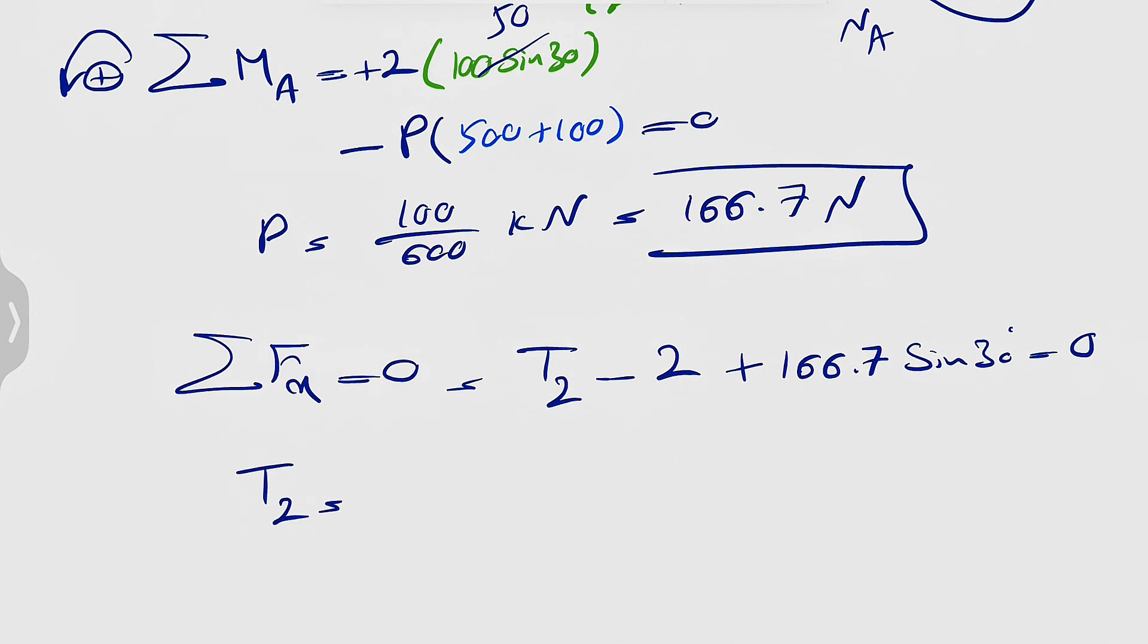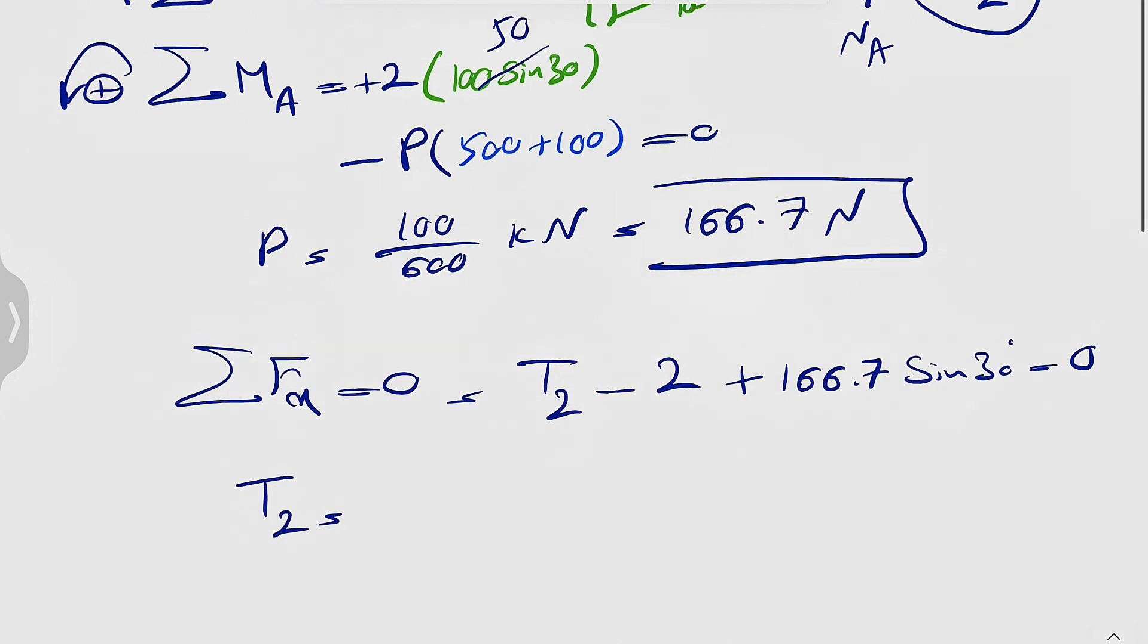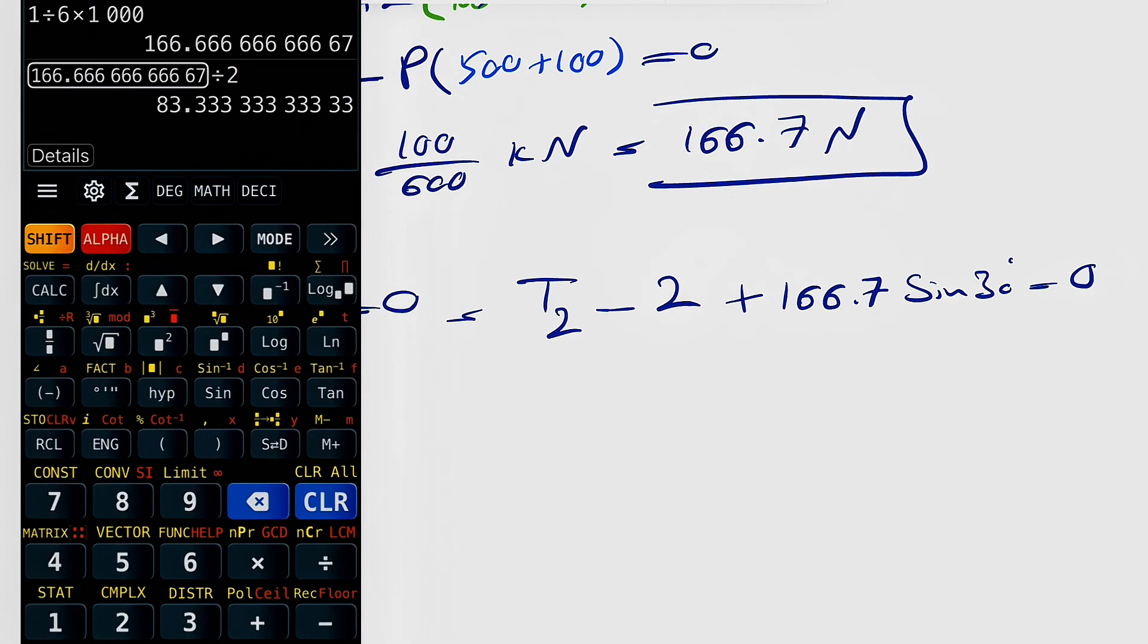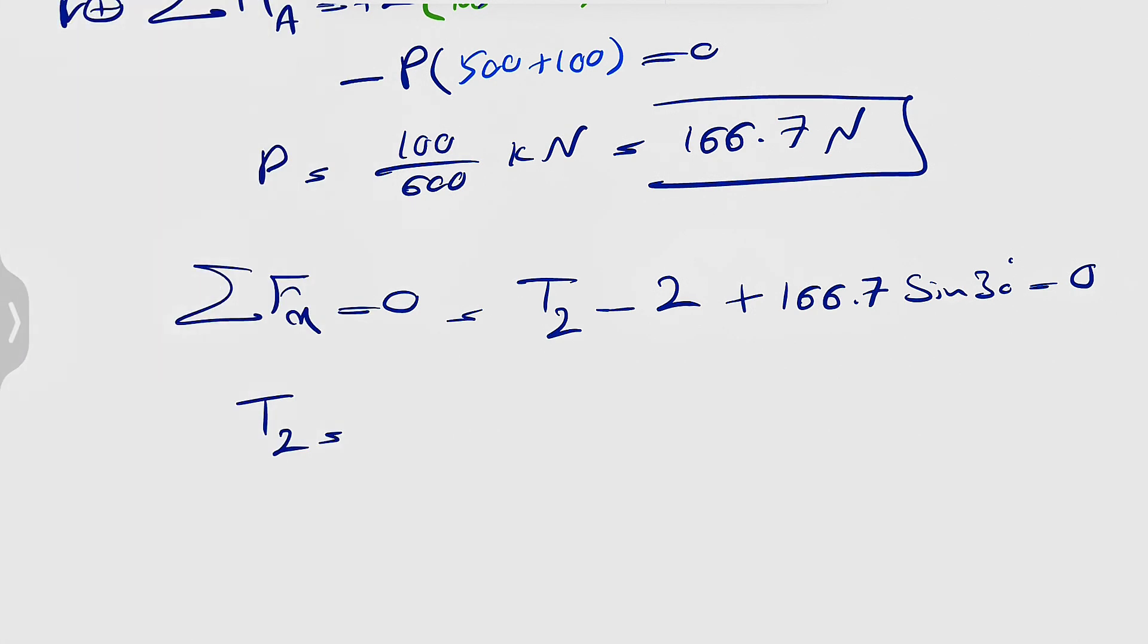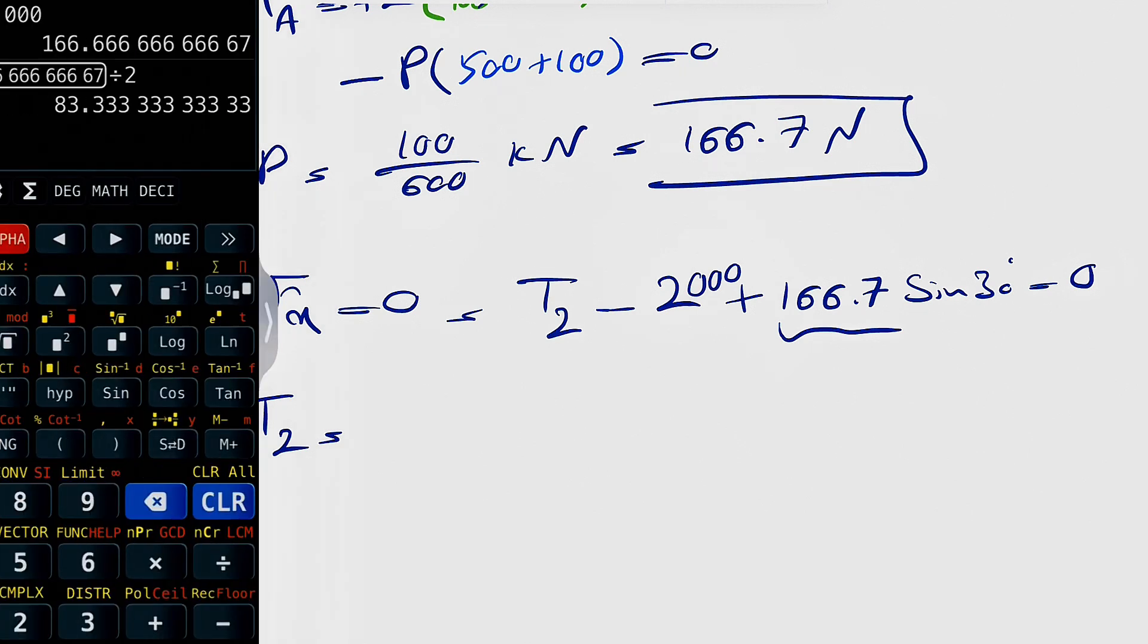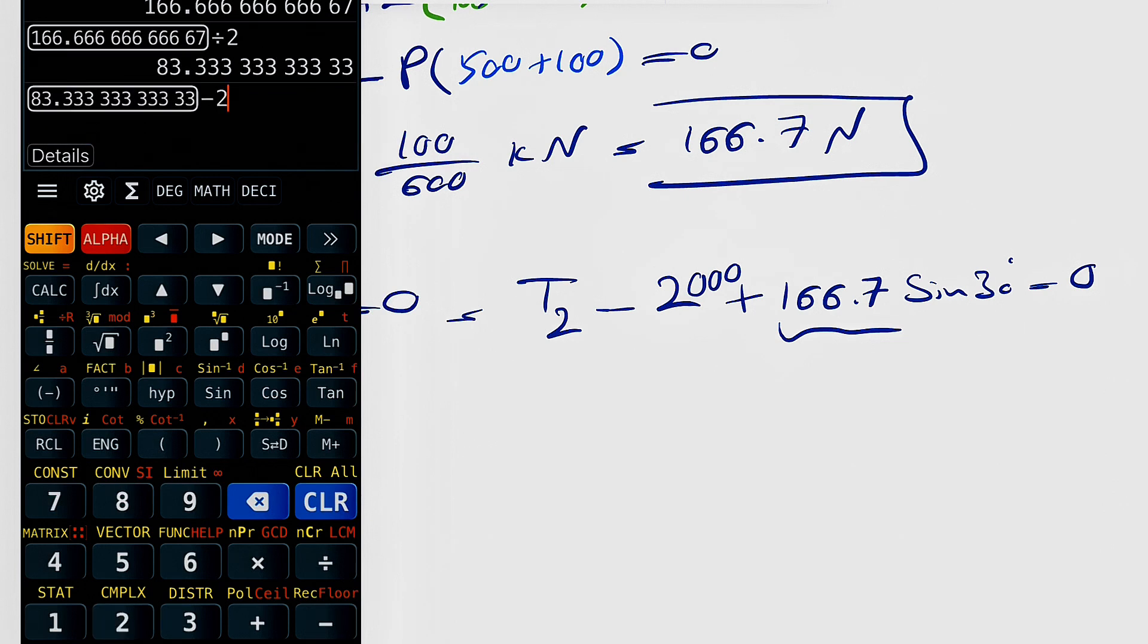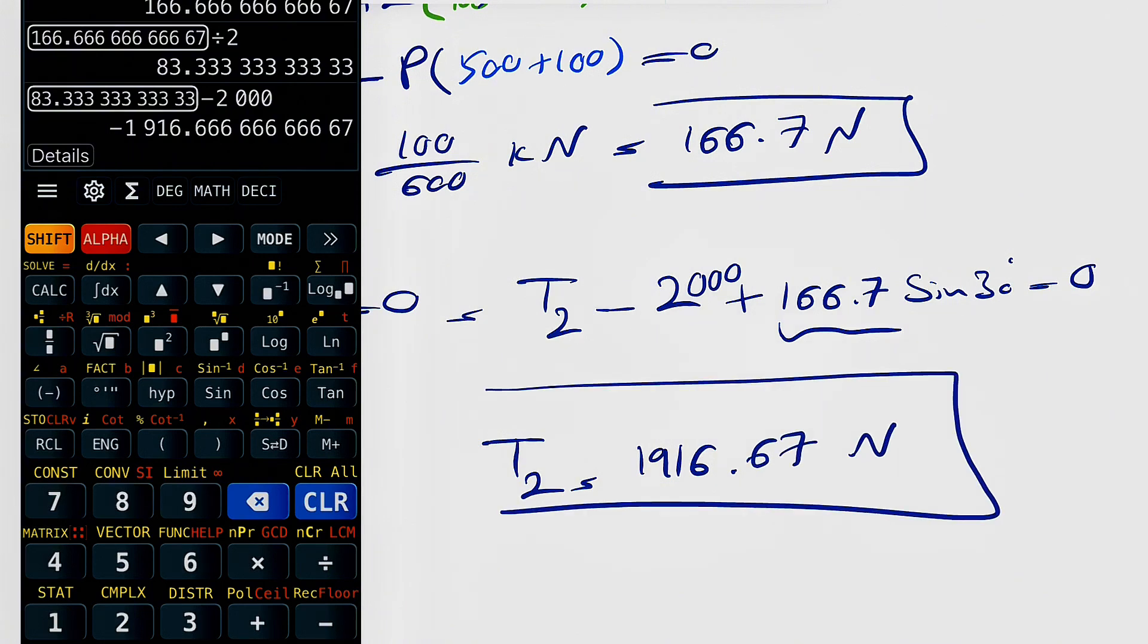Basically our T2 would be 166.7 divided by two. One thing you need to watch here is that we have this force in newtons, so the two kilonewton has to be in newtons as well, so we have this minus 2000. Our T2 would be 1916.67 newtons.